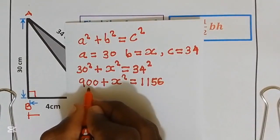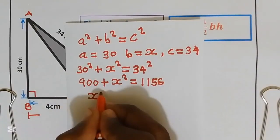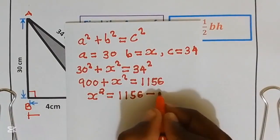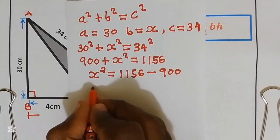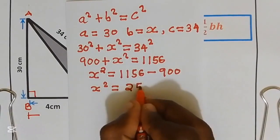Now I bring 900 to the left-hand side. That is going to be X squared equals 1156 take away 900, which gives us X squared equals 256.